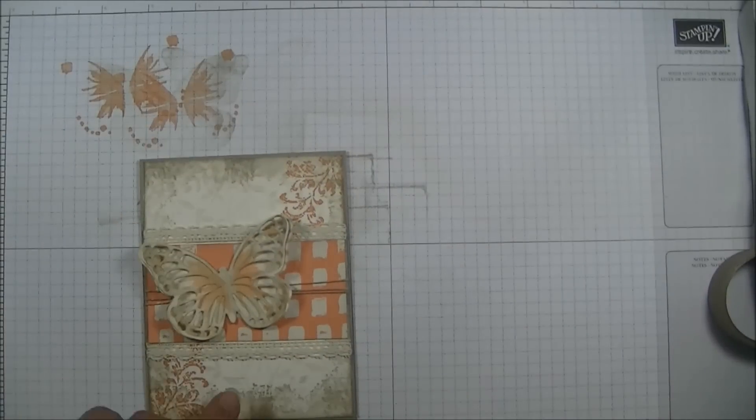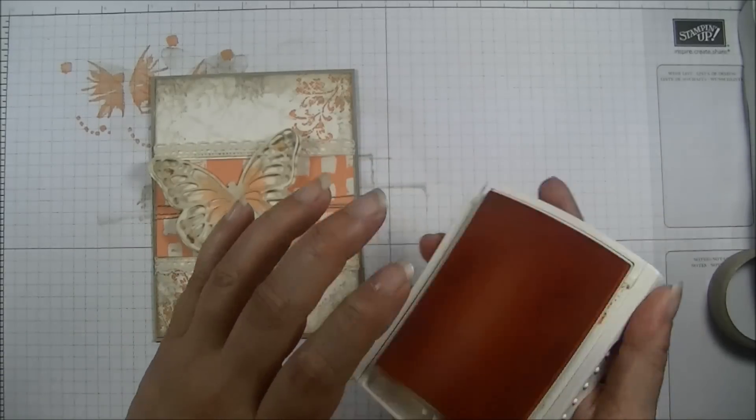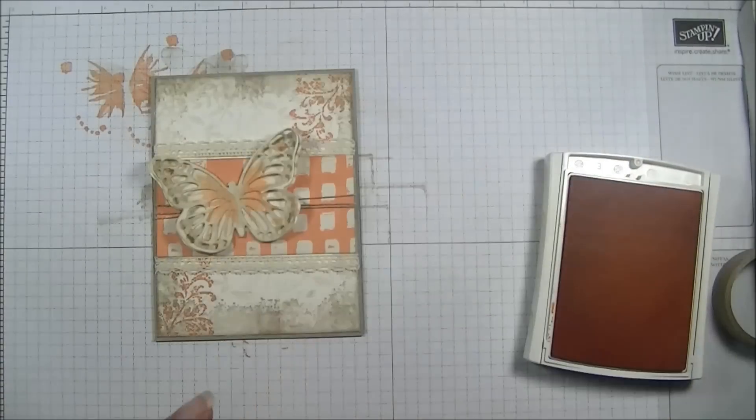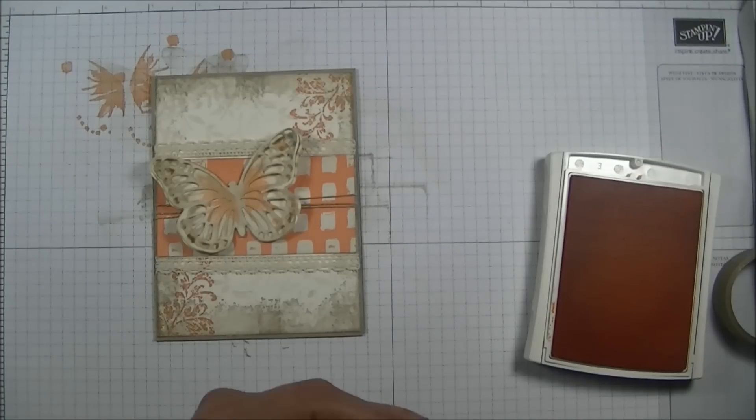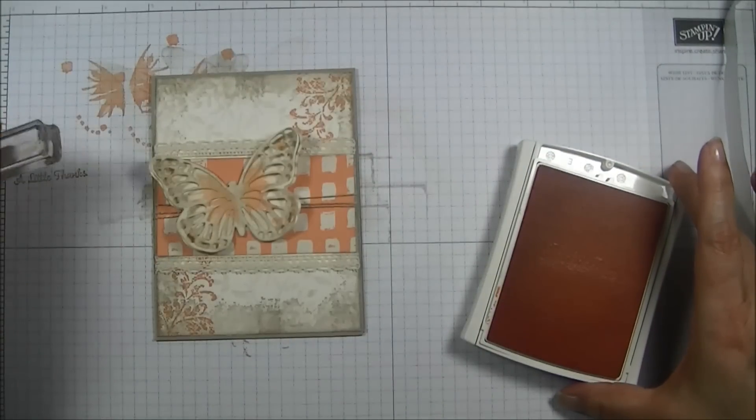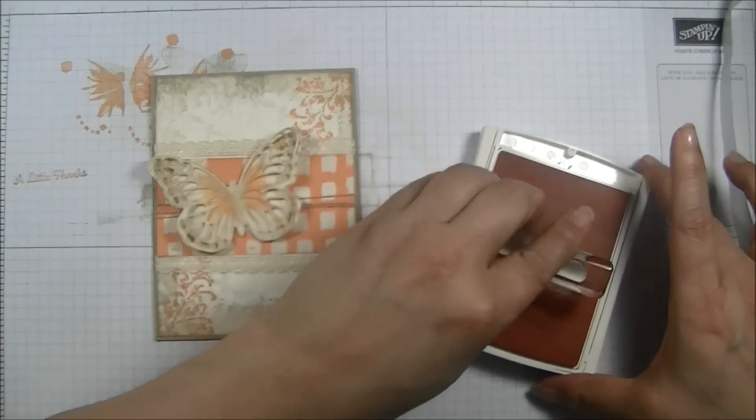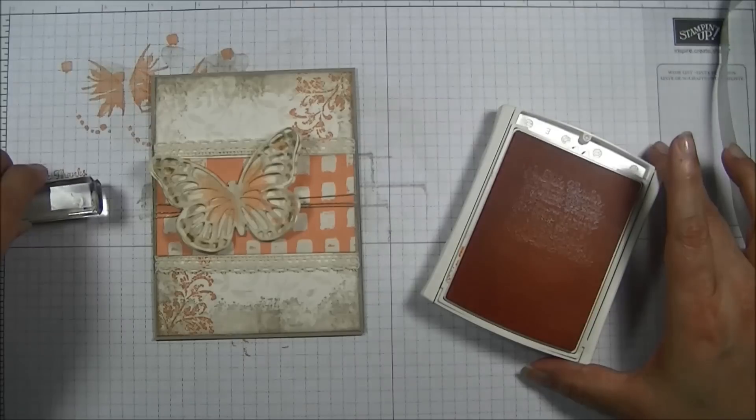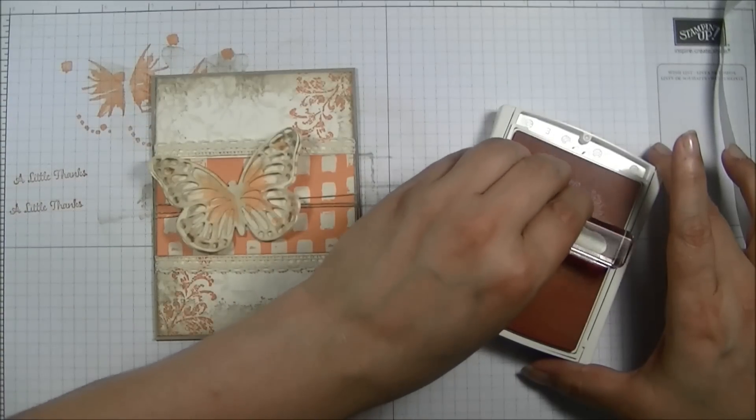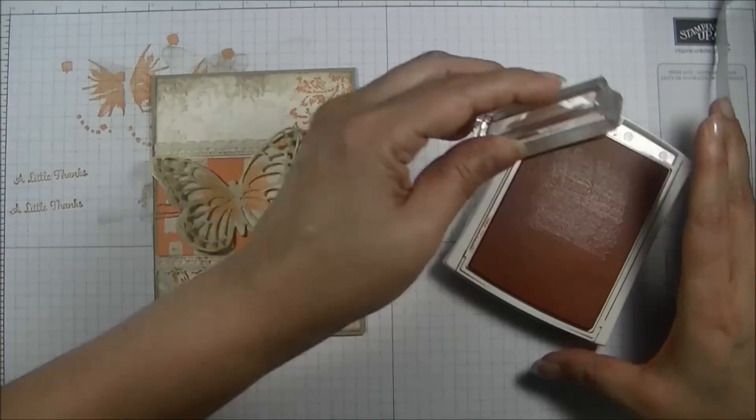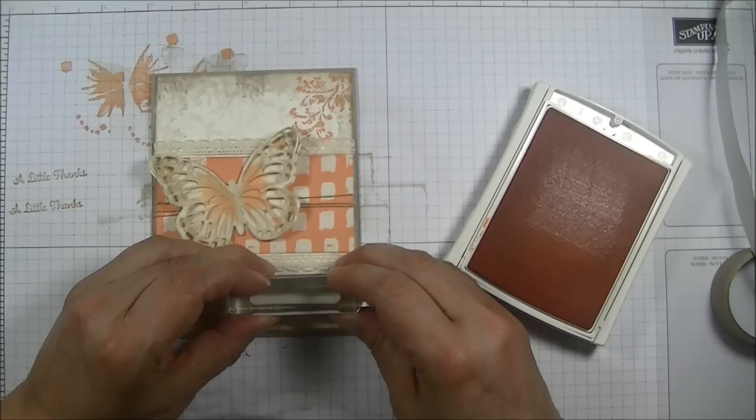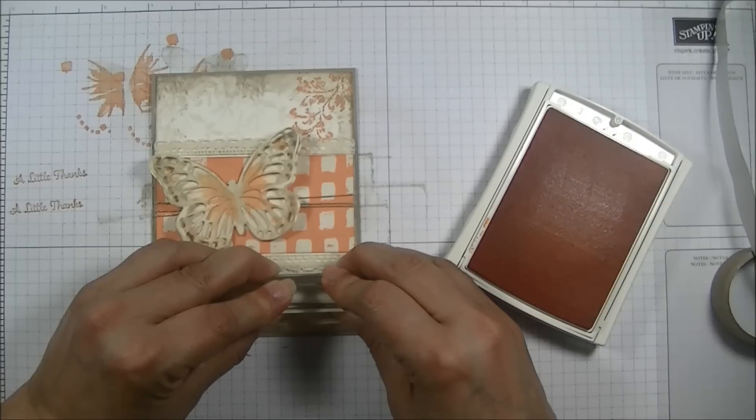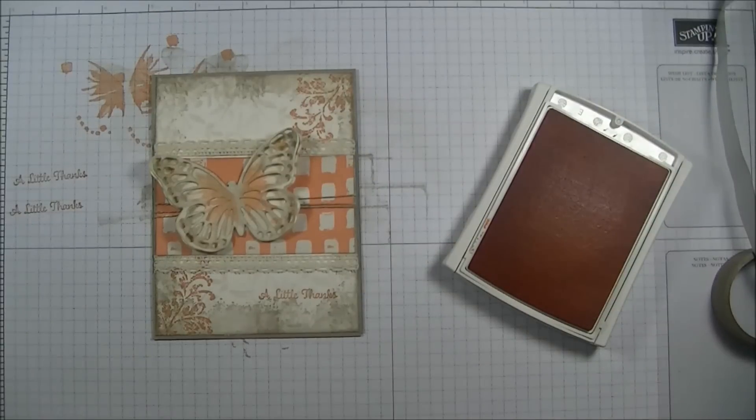And now for my sentiment. I am going to grab my Peekaboo Peach. My sentiment is coming from the One Big Meaning stamp set. And I am using a little thanks right up here. Whenever I am stamping sentiments I like to do a test one because I wear glasses and sometimes the stamp has been upside down. So I just want to make sure it is facing in the direction that it needs to be so that I don't have to start over. Because starting over is not fun. Right about here on the bottom right of my card I am stamping my sentiment. How perfect is that?